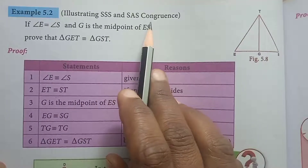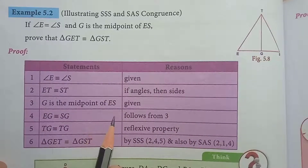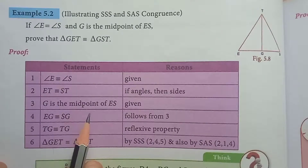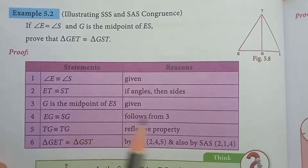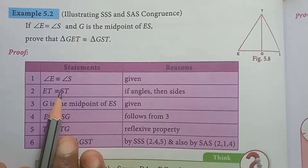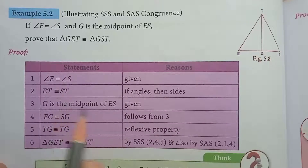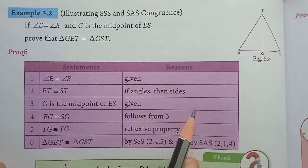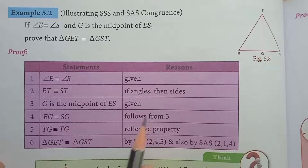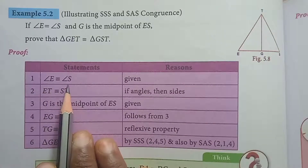Using this property, we have to prove it. To do the proof, they have given us a table with two columns: Statement and Reason. Let us look at the first statement. Angle E equals angle S.